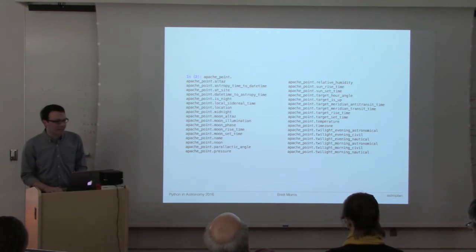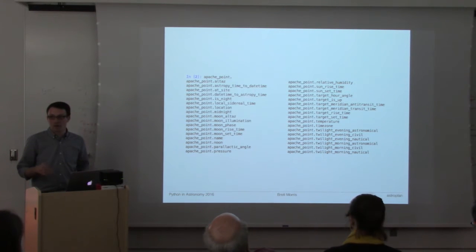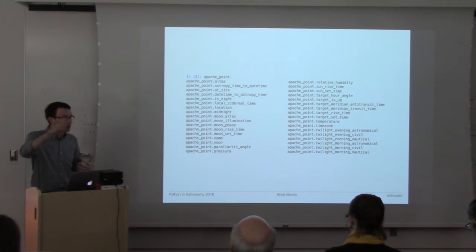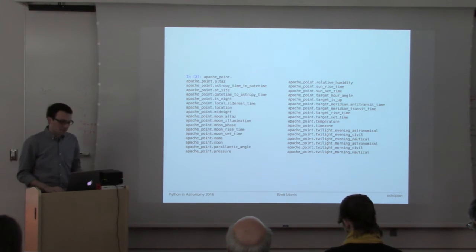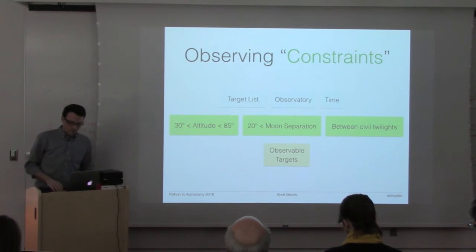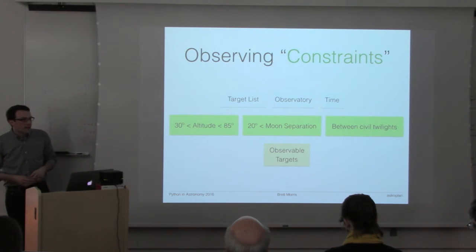I'm showing you just one of many convenience methods that are available on the observer class that can get the information that you would need either when planning observations or when you're sitting at the telescope and running an IPython terminal and trying to figure out when does my target finally rise above my lower pointing limit. You can do those things from the command line pretty easily.